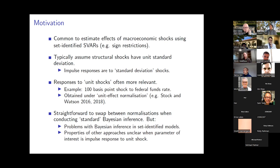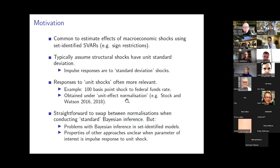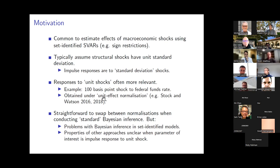We're trying to estimate the effects of monetary policy because we want to understand what happens when we move the cash rate by a particular amount. Impulse responses to standard deviation shocks don't answer that question — we need impulse responses to a fixed-size or unit shock. This point isn't new. Stock and Watson argue that impulse responses to unit shocks are what we should be interested in, and they explain you can obtain those under the unit effect normalization.